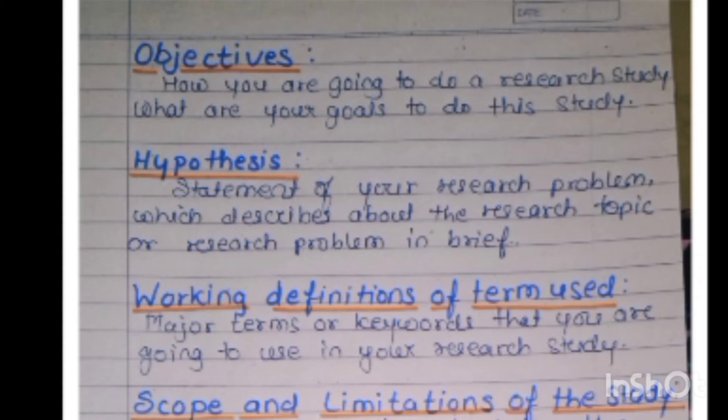After that, working definitions mean the particular key terms used. For example, if your title is 'A study of effects of e-learning methods used by schools and colleges on the performance of students,' the keywords in this title are 'e-learning' and 'performance.' These are the key definitions — working definitions — you have to mention.